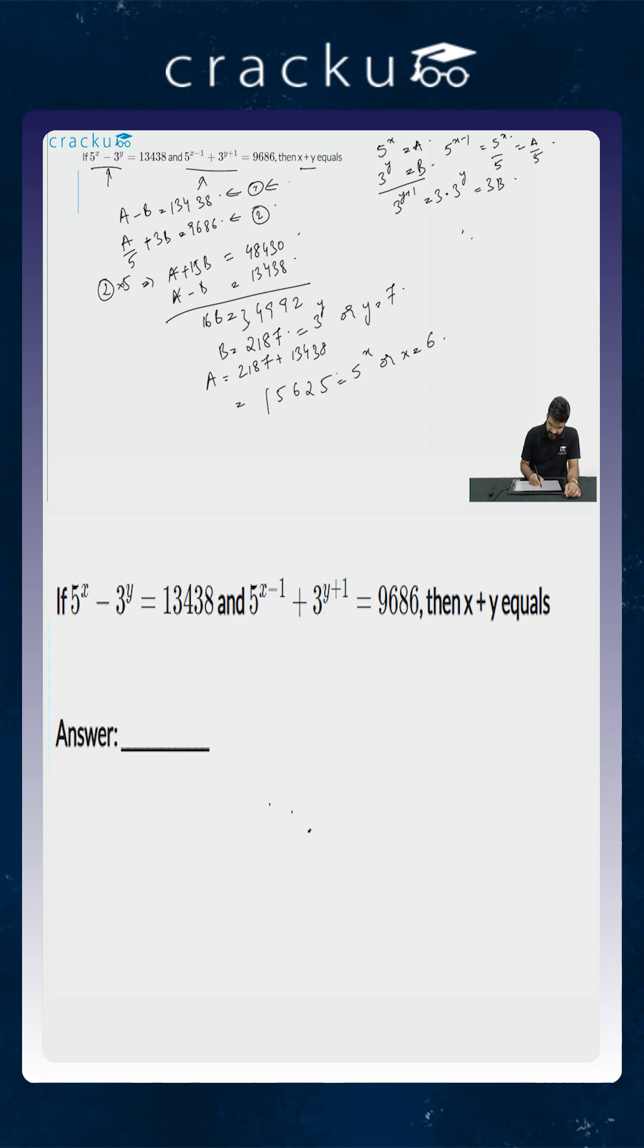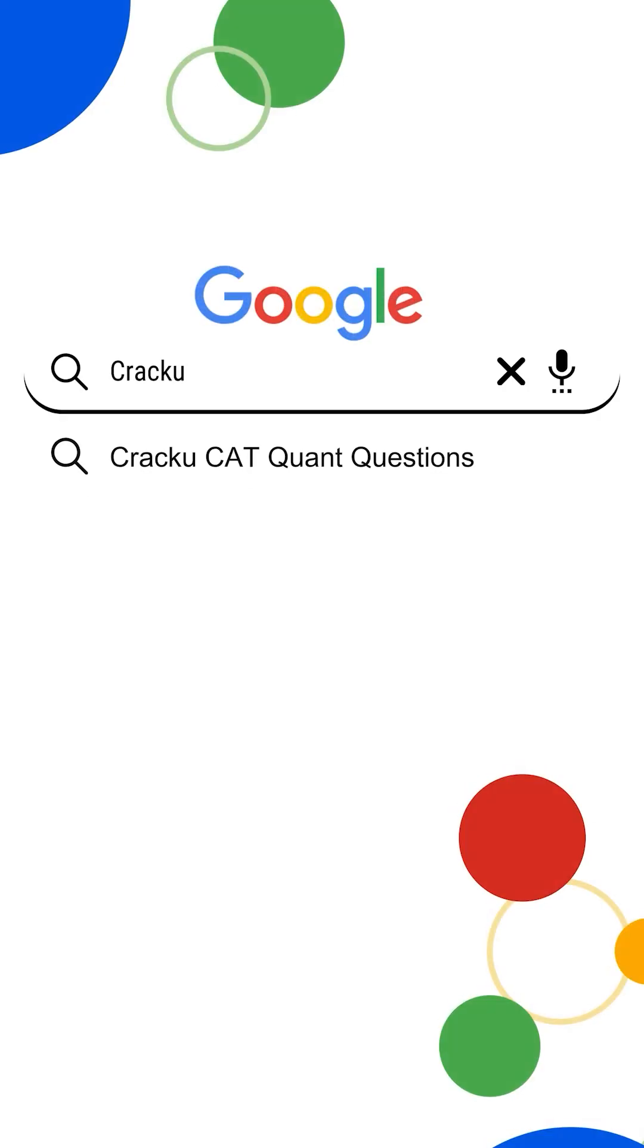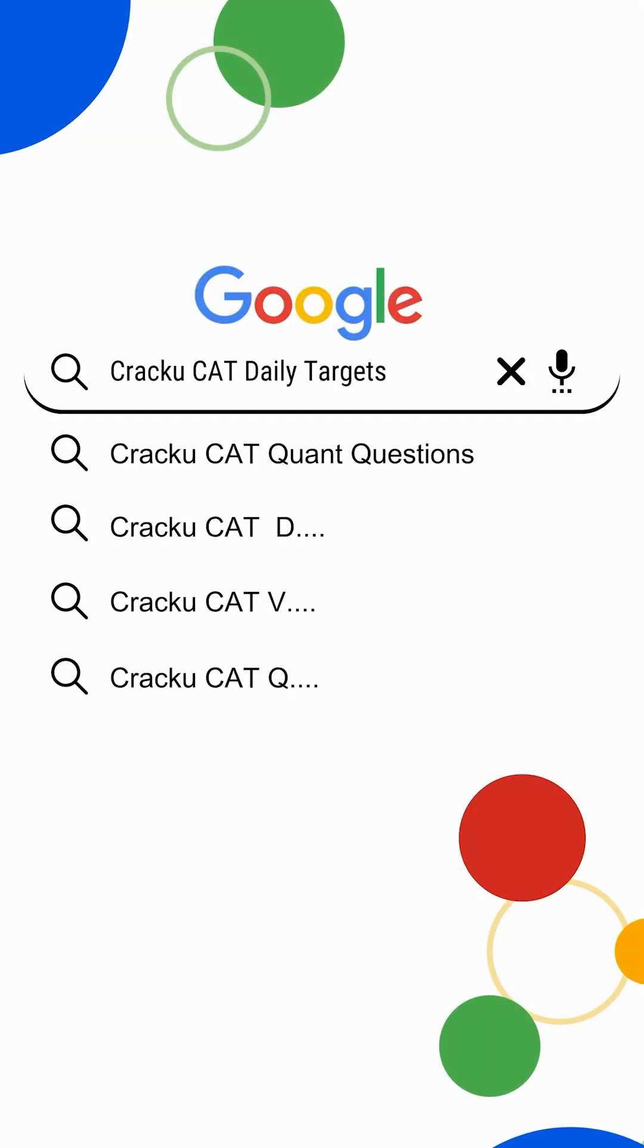Therefore, x plus y will equal 6 plus 7 which is equal to 13. So the answer in this case is 13. If you want a structured daily practice plan, just go to Google and search CrackU CAT daily targets.